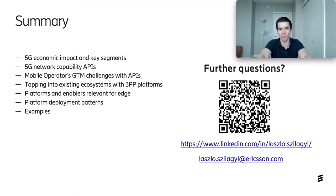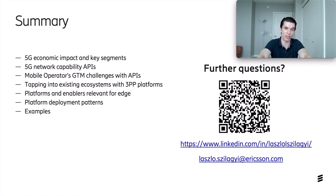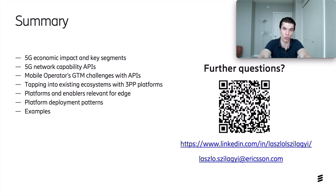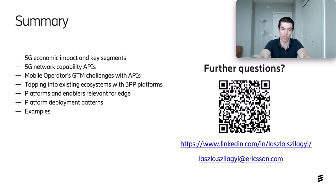As a summary, today we discussed the economic impact of 5G and the key segments, the 5G network capability APIs relevant for edge computing application developments, the mobile operators' go-to-market challenges with these APIs and how tapping into existing ecosystems with third-party platforms can potentially mitigate these challenges, the typical platforms and enablers relevant for edge computing and how to categorize these enablers into platform integration patterns, and some concrete implementation examples. Hope you enjoyed the presentation. Thanks for your attention, and if you have further questions, feel free to reach out. Goodbye.